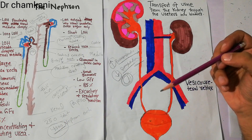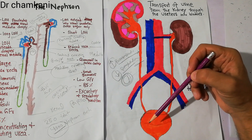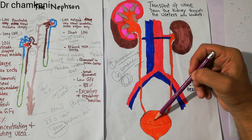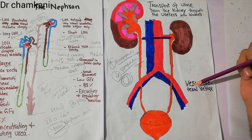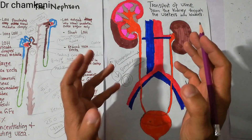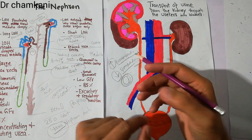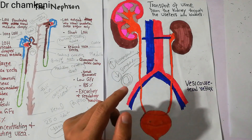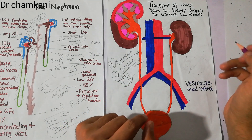If there is any abnormality due to which there is a reflux or passage of urine from the bladder into the ureter, it is known as vesico-ureteral reflux. There are many causes, but from a physiology point of view, we are going to discuss the primary cause — primary vesico-ureteral reflux.